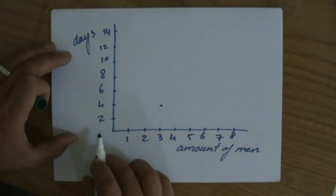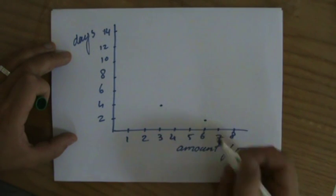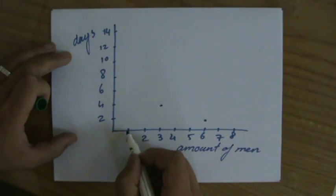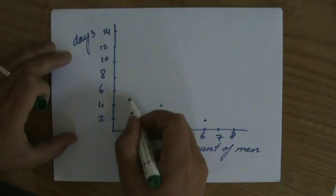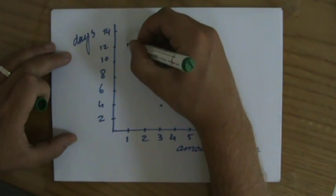And that means that six men are going to take two days to do the same job. And all by myself, one man is going to be two, four, six, eight, ten, twelve days. That's what we said.